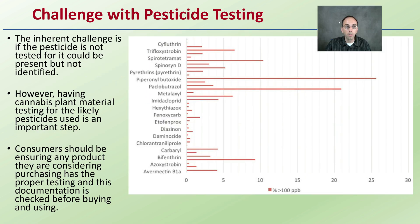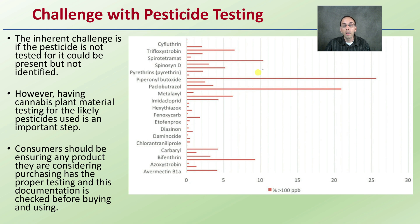The challenge of pesticide testing: the inherent challenge is that if a pesticide is not tested for, it could be present but simply not identified. However, having cannabis plant material tested for the likely pesticides used is a very important step, even if it's just an initial step. Consumers should ensure any product they're considering purchasing has proper testing, and that documentation is checked before buying and using that product. Just because labs can't test for everything, testing a good subset and passing all of those tests can be a good indication that the sample is probably clean. Keep in mind there's other testing — such as heavy metals and mycotoxins — that should also be considered. This video is focused on educating you on the specifics of pesticide testing in cannabis.